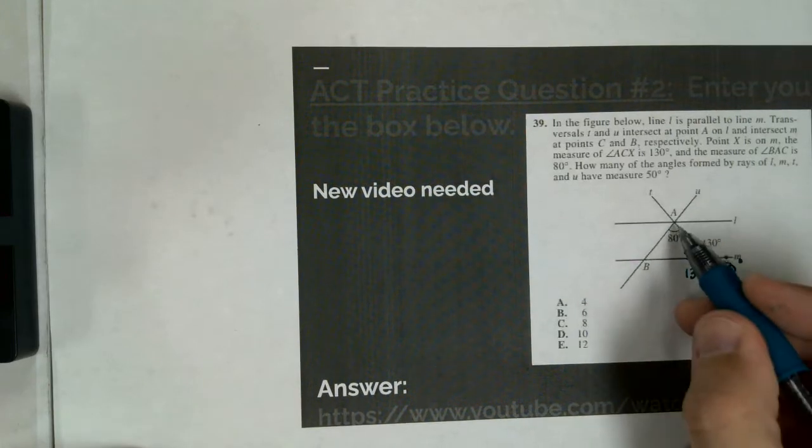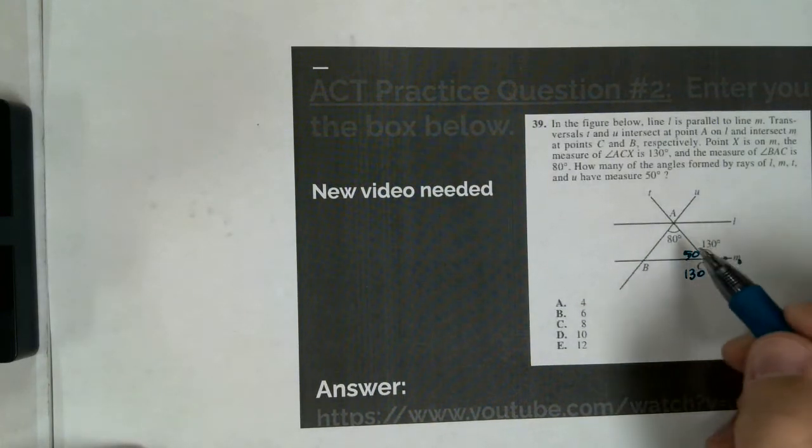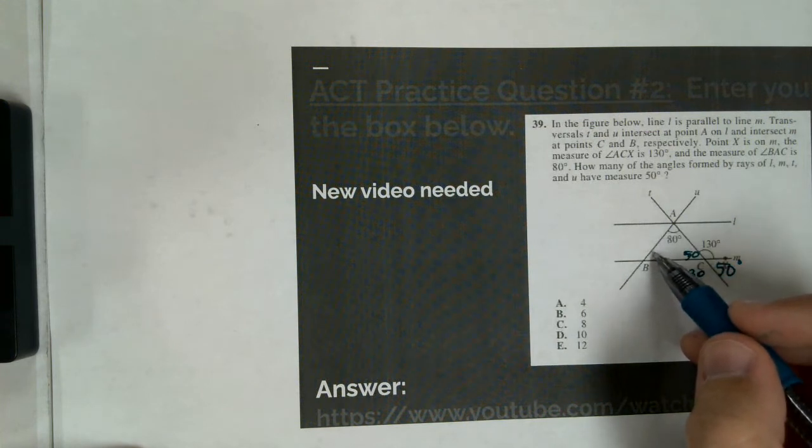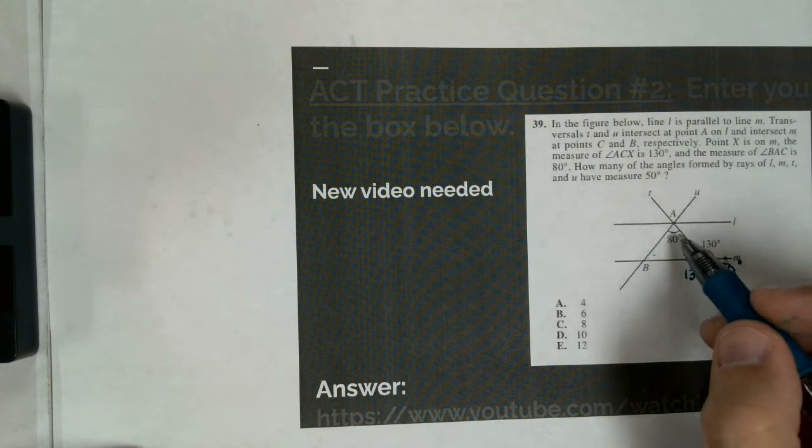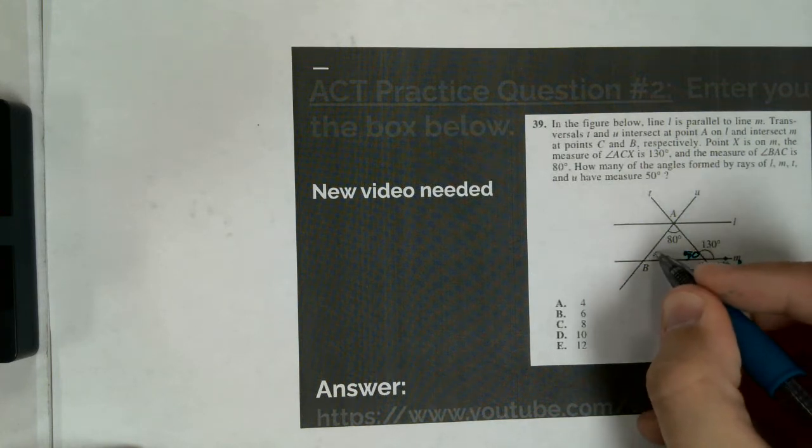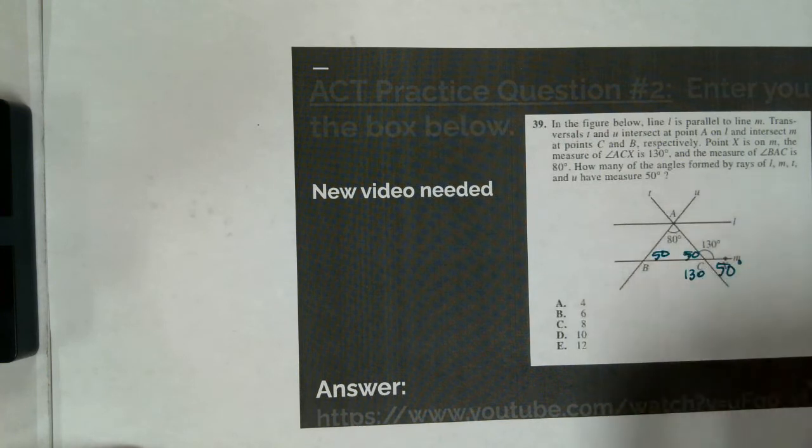Alright, so now we look at this inside triangle. With the inside triangle, I've got an 80 degree, we've got a 50 degree, and this one right here, if I added this to the mix, that should make all these 180. So 80 and 50 make 130. 130 from 180 is going to be 50. So this is another 50 degree angle.